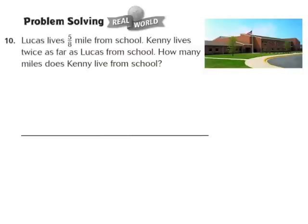Now let's take a look at question number 10. It says: Lucas lives 5 eighths miles from school. Kenny lives twice as far as Lucas from school. How many miles does Kenny live from school? Lucas lives 5 eighths mile from school, and Kenny lives twice as far. Remember, when you see the phrase 'twice,' it means you're multiplying by 2. So our problem becomes 2 times 5 eighths — we're finding 2 groups of the fractional part 5 eighths.